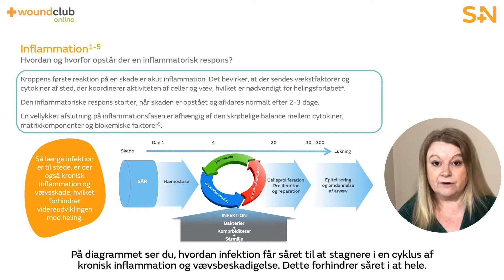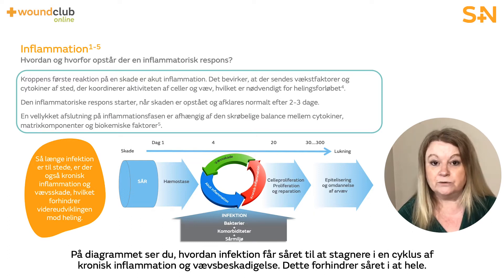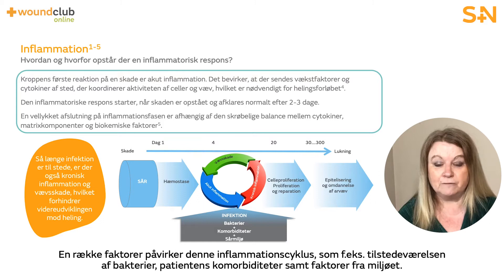In the diagram, you can see that in the presence of infection, the wound gets stuck in a cycle of chronic inflammation and tissue damage, which prevents the wound from healing. A variety of factors influence this cycle of inflammation — for example, the presence of bacteria, patient comorbidities, and factors from the environment.